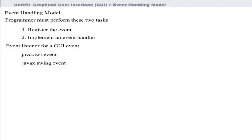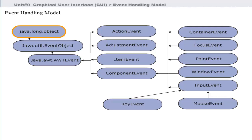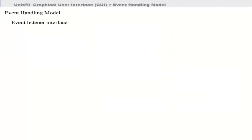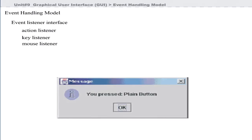Event listener interfaces come from the packages java.awt.event and javax.swing.event. Java defines classes and interfaces for handling events. java.lang.Object is at the top of the hierarchy, with subclasses EventObject and AWTEvent. The ComponentEvent class has subclasses including InputEvent, which has KeyEvent and MouseEvent classes that handle keyboard and mouse events. Event listener interfaces include ActionListener, KeyListener, and MouseListener capabilities.